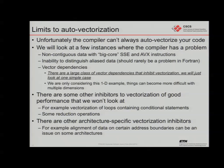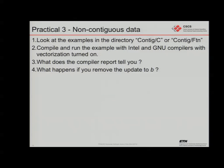Here, as I said, this is a very simple example — all we're looking at is this simple copy and update. We're only considering 1D things; it can get much more difficult with multiple dimensions, and that's where getting feedback from the compiler can be very important. There are also some inhibitors we won't look at here: sometimes conditional statements in loops can cause problems for a vectorizing compiler, and there are architecture-specific vectorization inhibitors — for example, to do with alignment of data on architectures like Blue Gene Q.